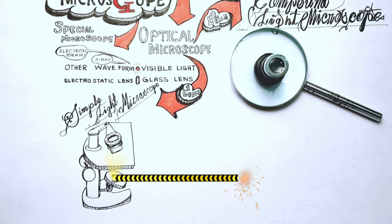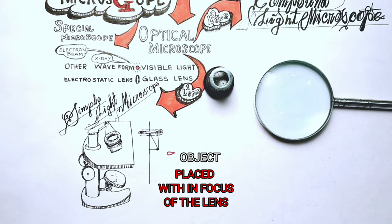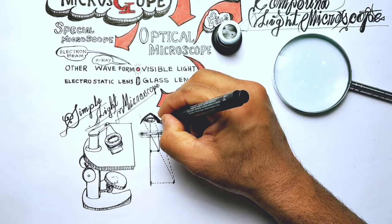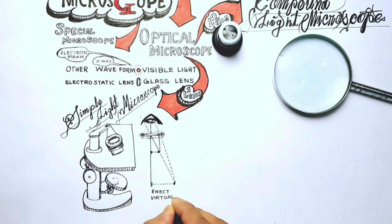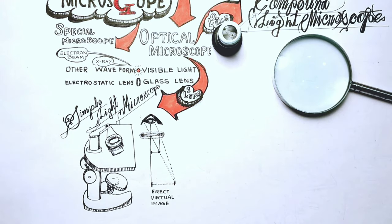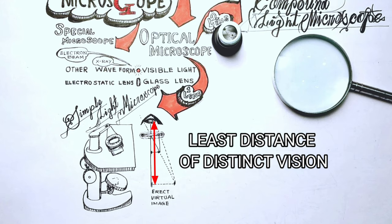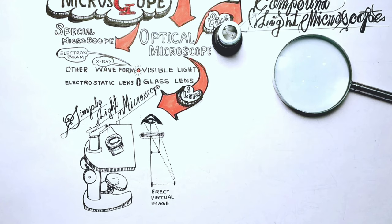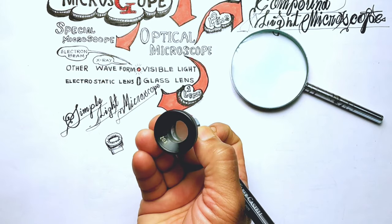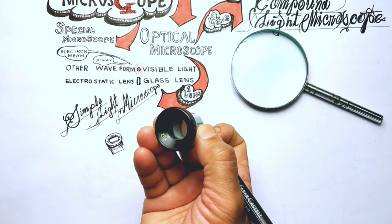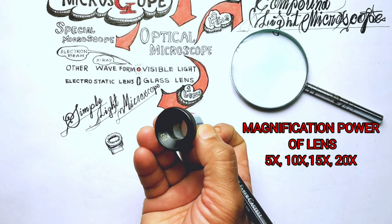It works on the principle that when a tiny object is placed within its focus, a virtual erect and magnified image of the object is formed at the least distance of distinct vision from the observer's eye. The maximum magnification of a simple light microscope is about 10x, although 5x-15x magnification power lenses are also used.